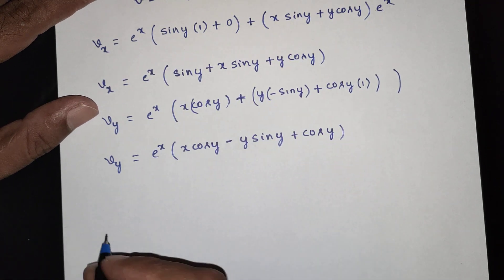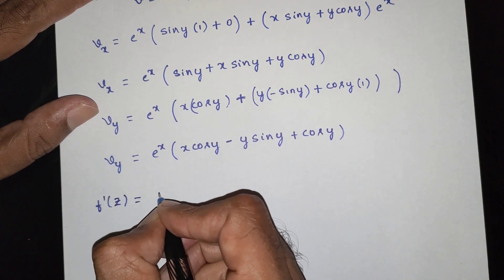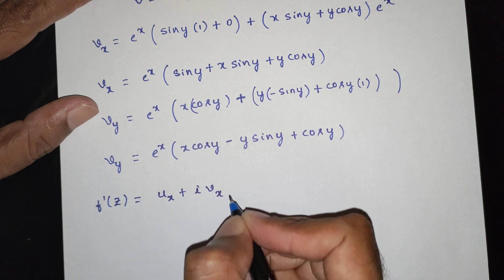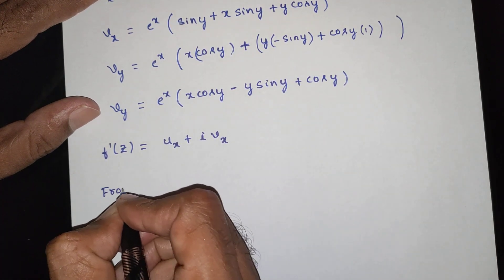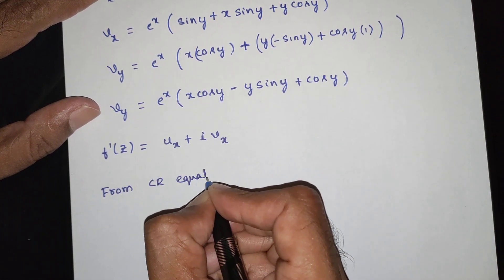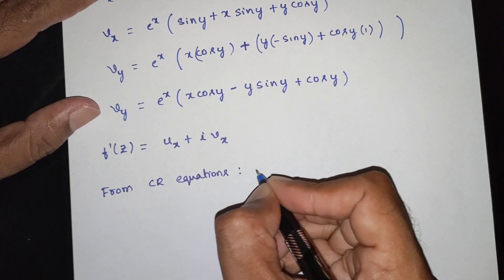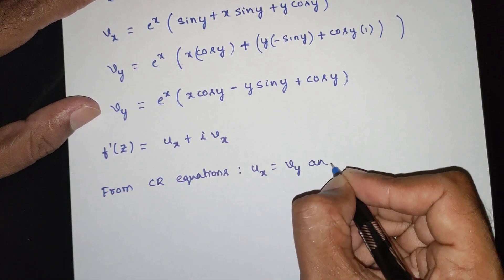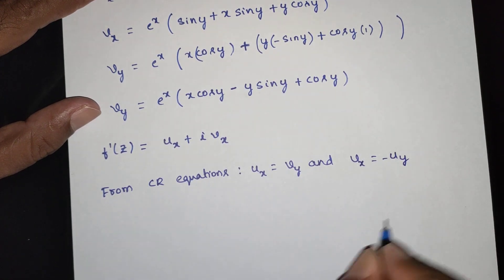Next, we apply the f dash of z formula: f dash of z is equal to ux plus i times vx. This is the formula. From the Cauchy-Riemann equations, ux equals vy and vx equals minus uy.